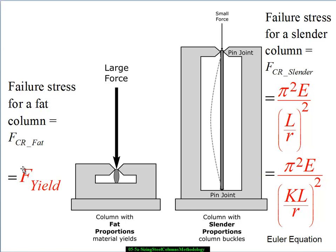I want you to notice this is a material property, the yield stress of the material. E is a material property. It's the stiffness of the material. Those two things don't exist in the same formula. This is the mode of failure for fat. This is the critical material property for a slender column.